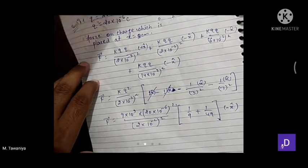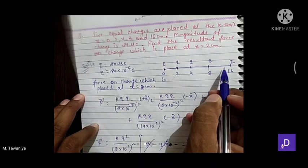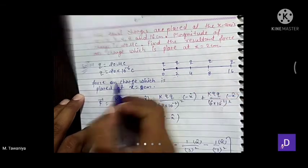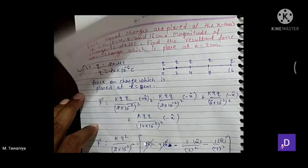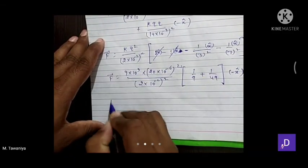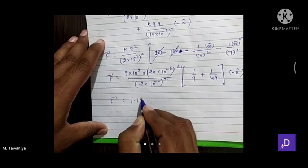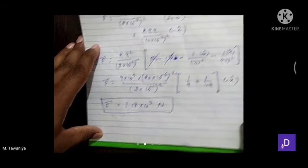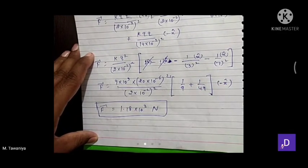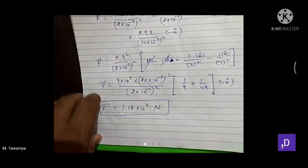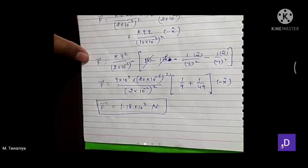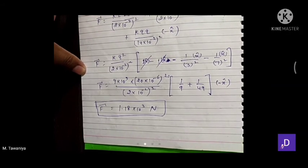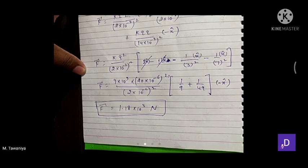Minus x̂ बता रहा है कि resultant force उस direction में लगेगा। Value calculate करने पर आएगा 1.18 × 10³ Newton। तो force रहेगा 1.18 × 10³ Newton। इसको note कर लीजिए।